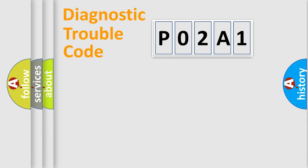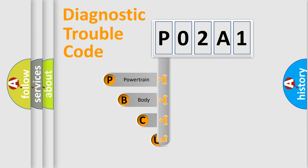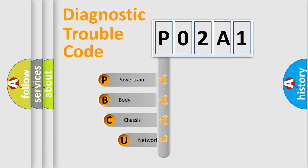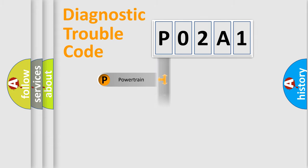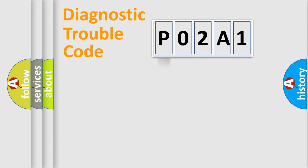Let's do this. First, let's look at the history of diagnostic fault code composition according to the OBD2 protocol, which is unified for all automakers since 2000. We divide the electric system of the automobile into four basic units: Powertrain, Body, Chassis, and Network.